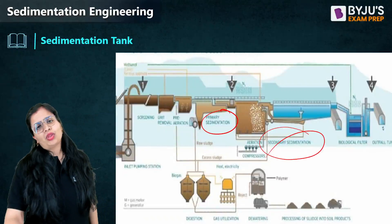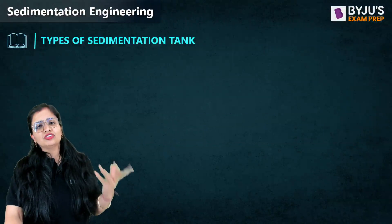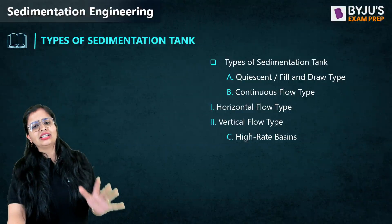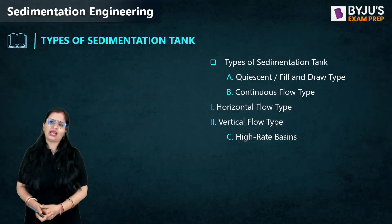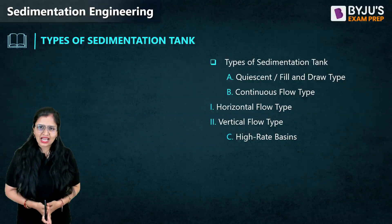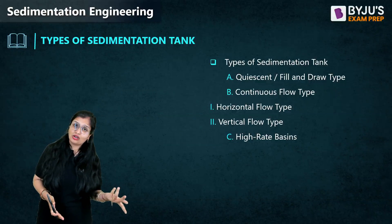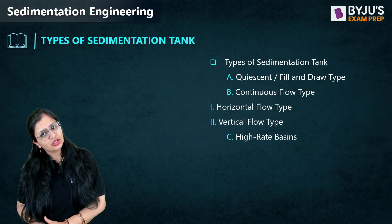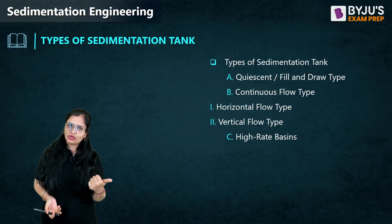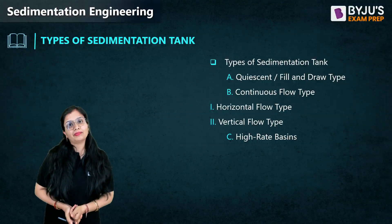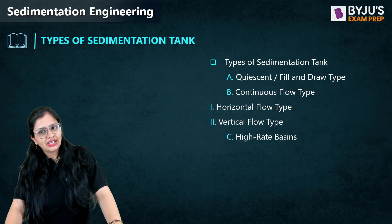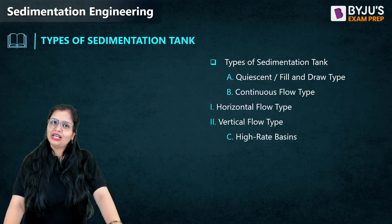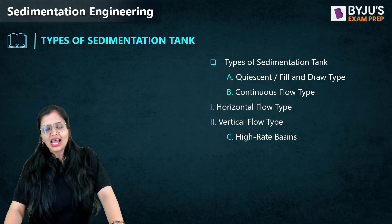The purpose of sedimentation is the removal of fine suspended solids. There are actually three types of sedimentation tank. First is the quiescent type tank, also called the fixed type or fill and draw type tank. Second is the continuous flow type tank, which includes horizontal flow and vertical flow type tanks. The third is high rate. We predominantly focus on the first two types.